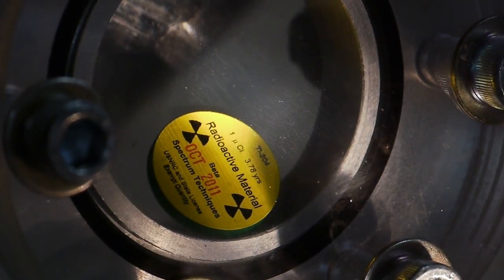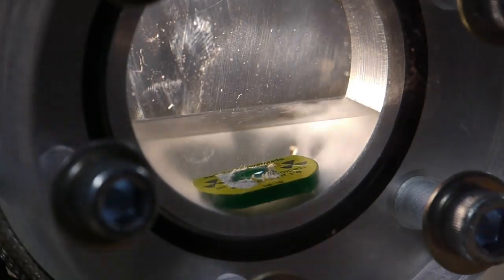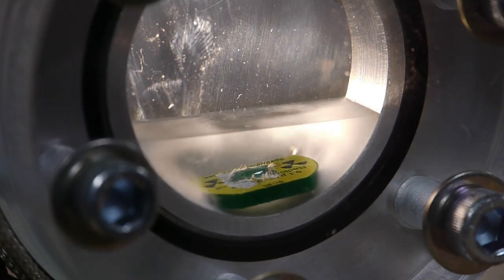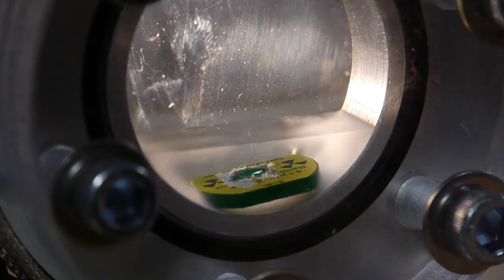For the strontium-90 source, I took the little paper cover off, just so that I could get the radiation disc flat in the chamber. The disc is a little bit wider than the chamber is deep, so it wouldn't sit down flat.